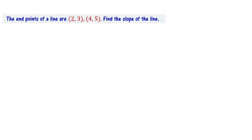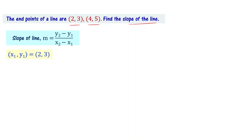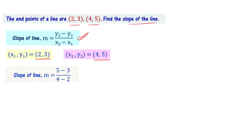Now let us solve a problem. The end points of the line are (2, 3) and (4, 5). Find the slope of the line. Take x1 = 2, y1 = 3 as the first point and x2 = 4, y2 = 5 as the second point. Using the slope formula, slope equals y2 minus y1 divided by x2 minus x1, which is 5 minus 3 divided by 4 minus 2, that is 2 by 2, equal to 1. So the slope of the line is 1, which means the angle is 45 degrees.